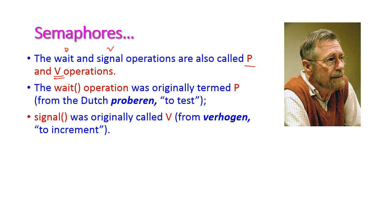Why are they called P and V? The wait operation was originally termed P. P stands for 'proberon', which is a Dutch term meaning 'to test'. Hence the wait operation is originally termed the P operation. The signal operation is originally called V. V stands for 'verogen', which is a Dutch term meaning 'to increment'. Hence signal was originally called V. So wait means P operation and signal means V operation.